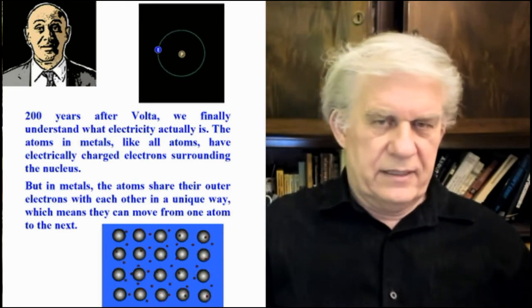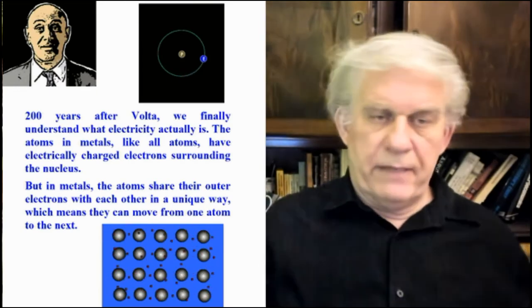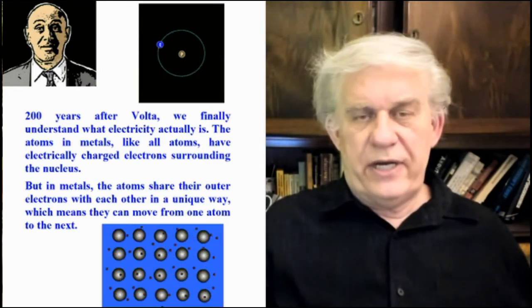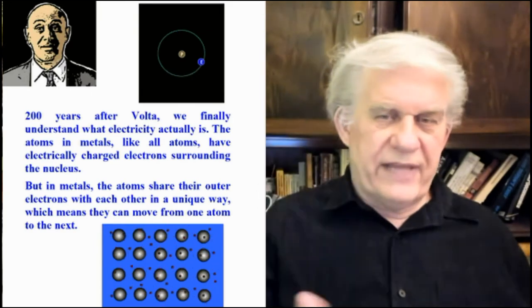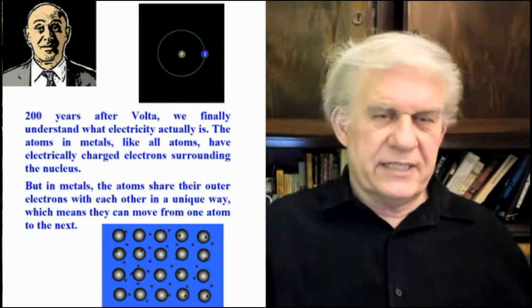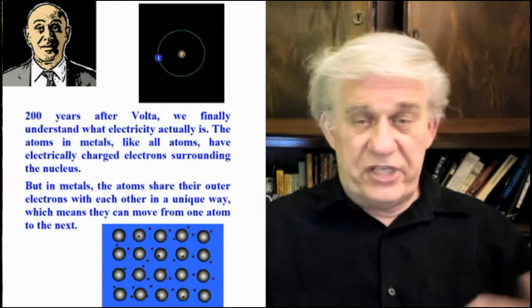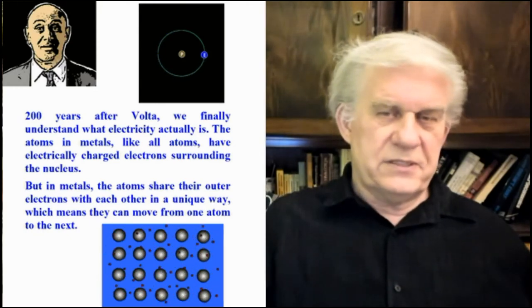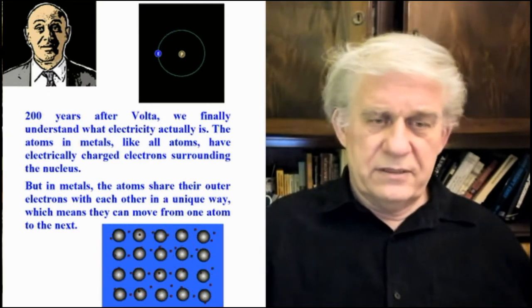But in metals, the atoms share their outer electrons. Share? So I've got a little electron. The other guy's got a little electron. What do you mean we share? We exchange them? In what way do we share them? How do you share an electron? And again, what holds that electron bound to the nucleus to begin with? All these issues come up because they're structural issues. What does an atom look like? That's going to be the issue. But he says it like it's a done deal. He says, but in metals, the atoms share their outer electrons with each other in a unique way, which means they can move from one atom to the next. So if they share, what's that got to do with moving from one atom to the next?